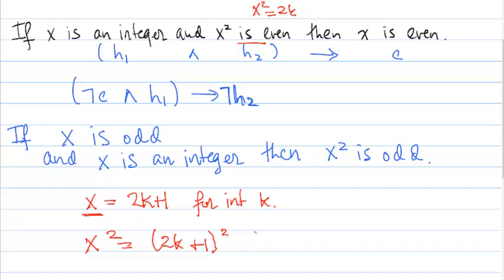And if I multiply this out, I get 4k²+4k+1.